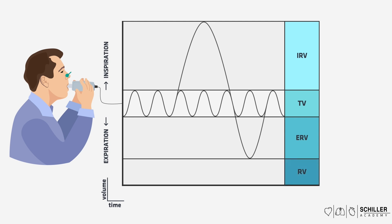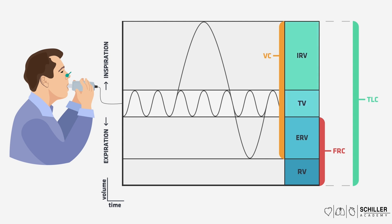Using these lung volumes, we can measure the lung capacities. The vital lung capacity refers to the maximum amount of air expired from a fully inflated lung — this means it is the tidal volume plus the inspiratory reserve volume plus the expiratory reserve volume. The functional residual capacity, which should not be mixed up with the residual volume, represents the volume of air remaining in the lungs after expiration of a normal breath — so it is the residual volume plus the expiratory reserve volume. The total lung capacity is the sum of all the lung volumes, and for a typical adult male it is about 6 liters, which we will use as an example in the following scenarios.